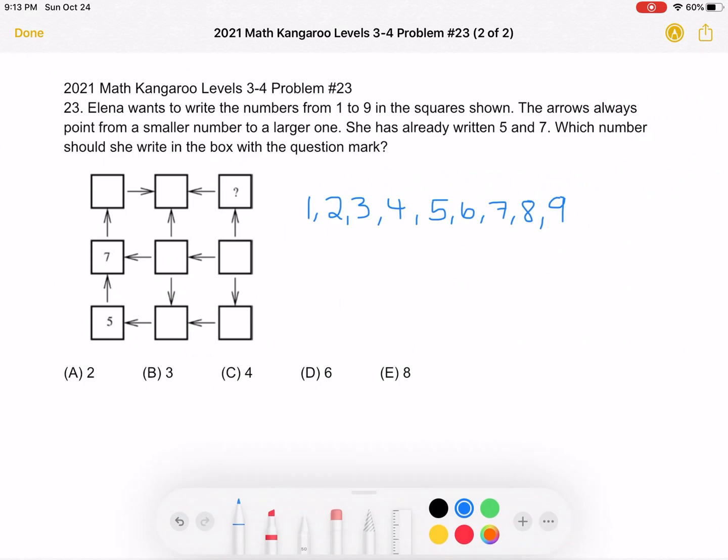So here is where we'll be doing the solution. To start, I've written down the numbers 1 through 9, which the problem says she will place in the squares shown. She's already placed the 5 and the 7, as you can see in the picture, so we can cross those out because we've already used them.